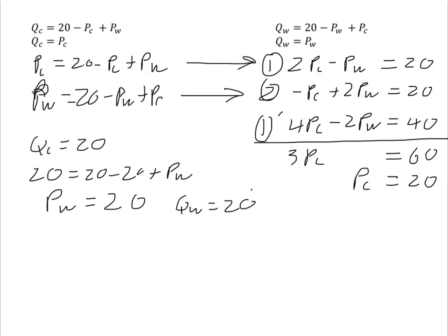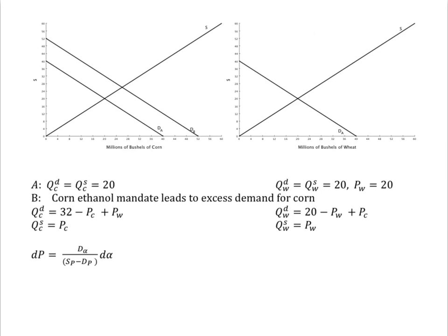Now we are ready to ask what happens if the government mandates that 10% of fossil fuels incorporate corn ethanol. That is, we have a shift in demand for corn. Let's assume this shifts demand out from DA to D sub B by 12 million bushels at any price for corn.